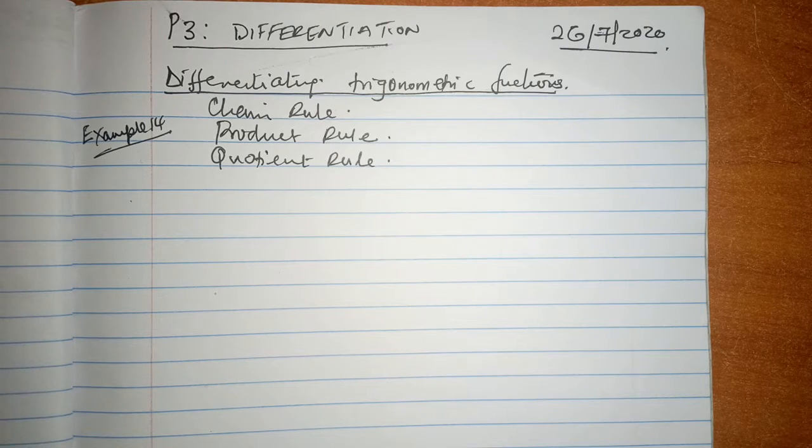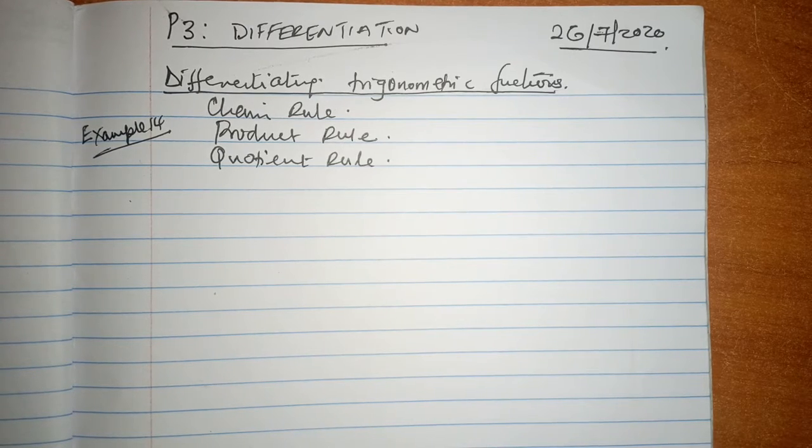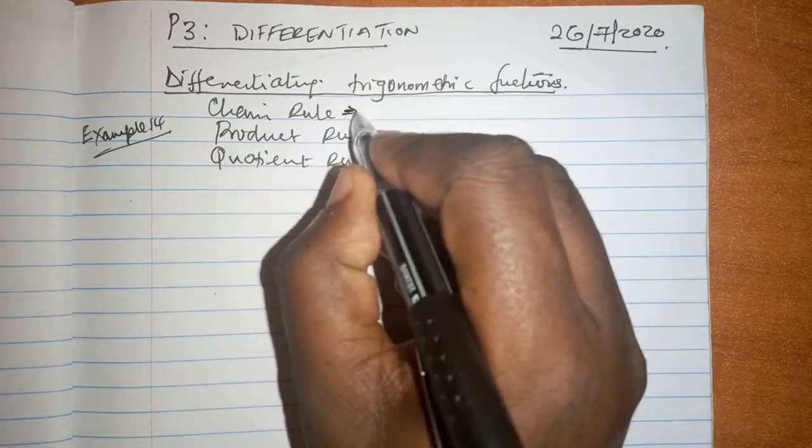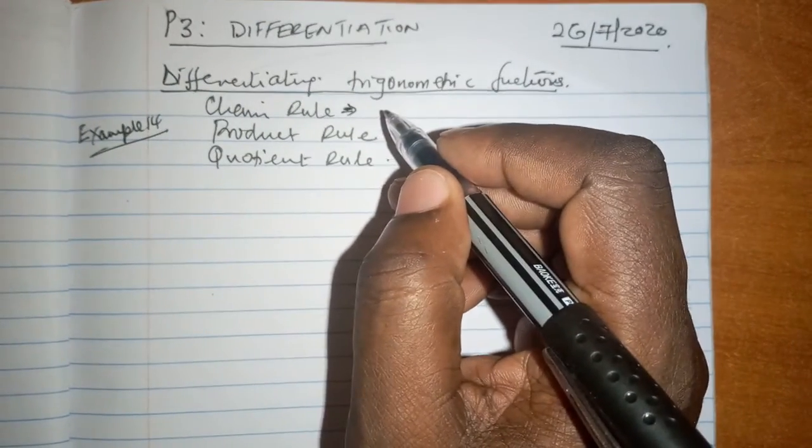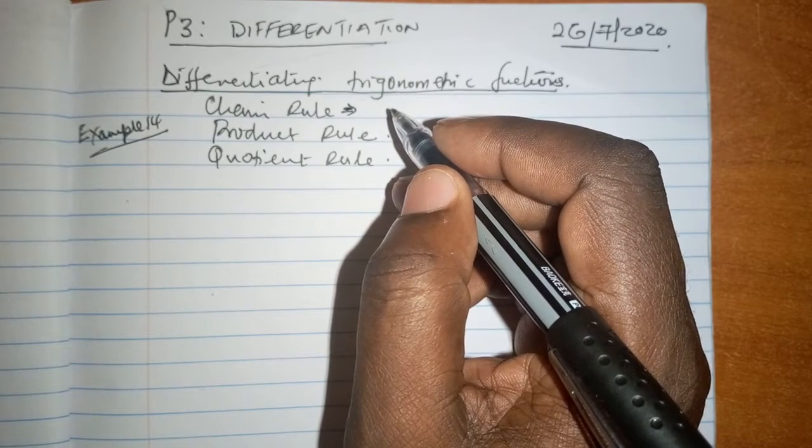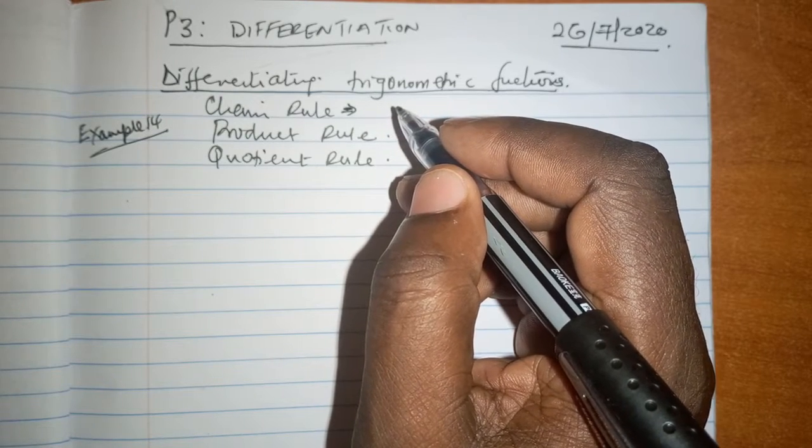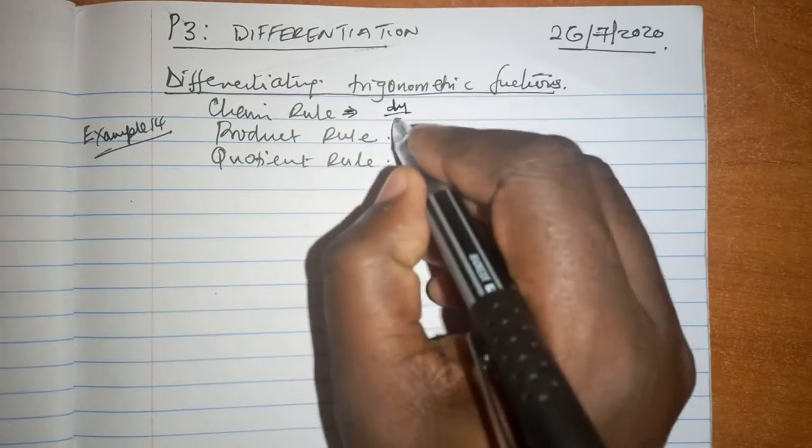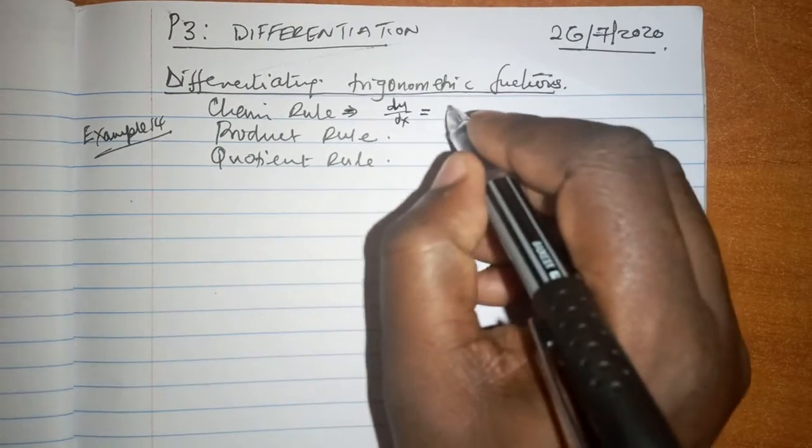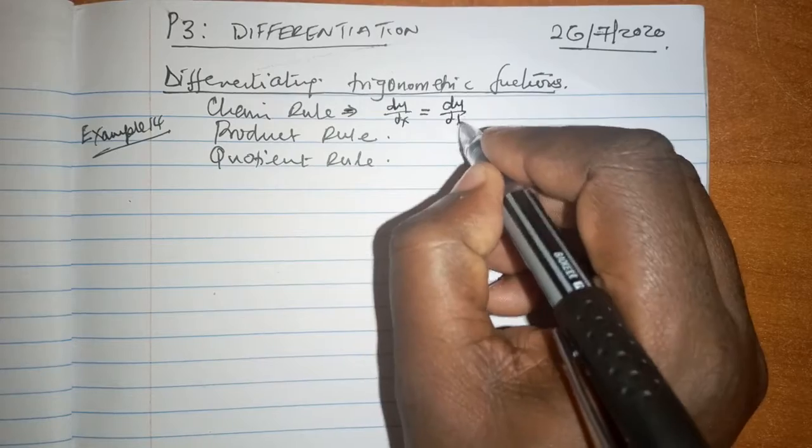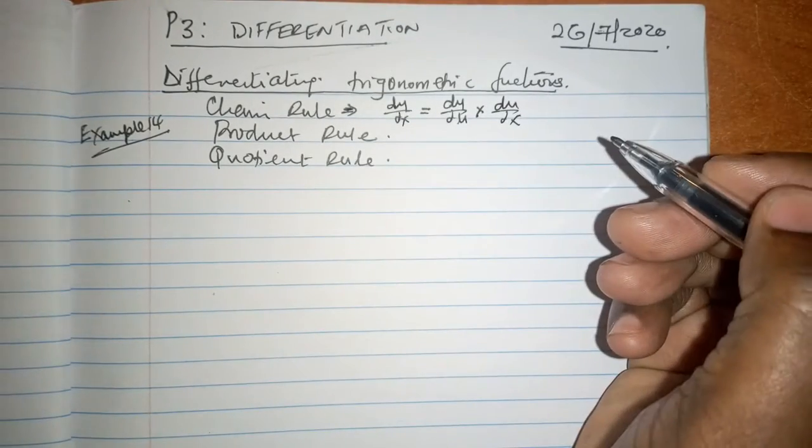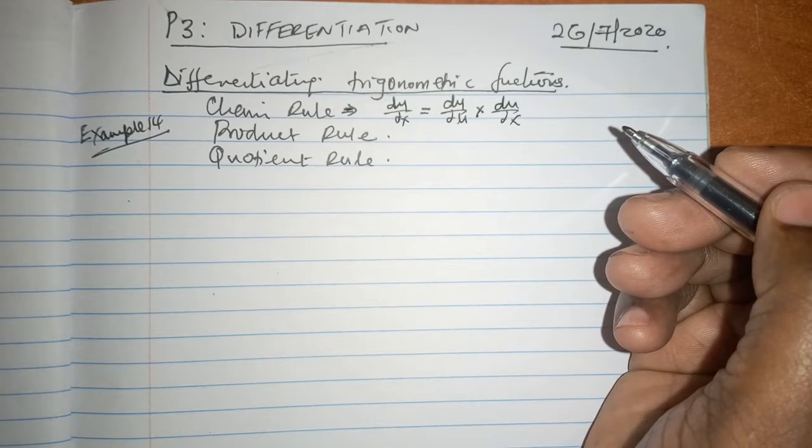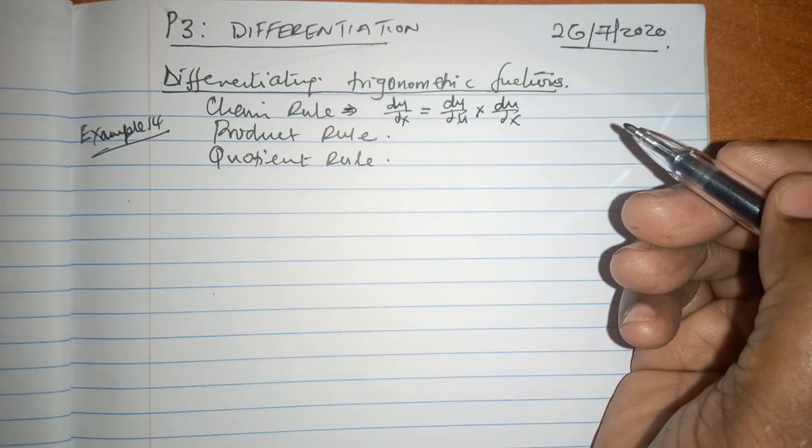Among the three rules that we have learnt, chain rule is simply talking about if you have two functions of x and y and x is not directly related, you talk about dy/dx to be equal to dy/du times du/dx. That is part of the chain rule and can be used of course in different formats.